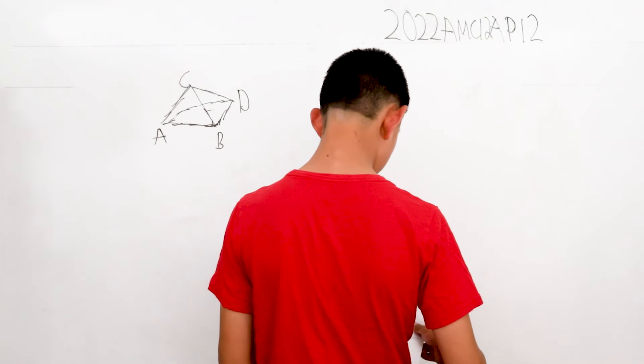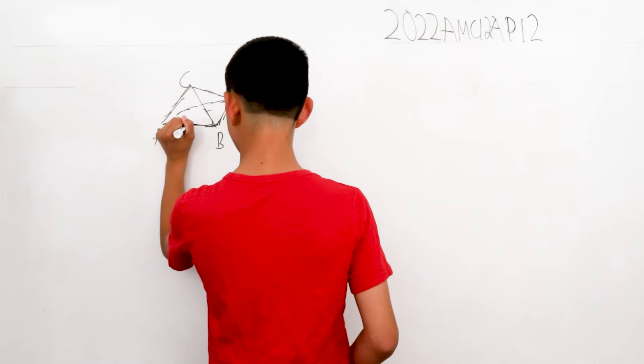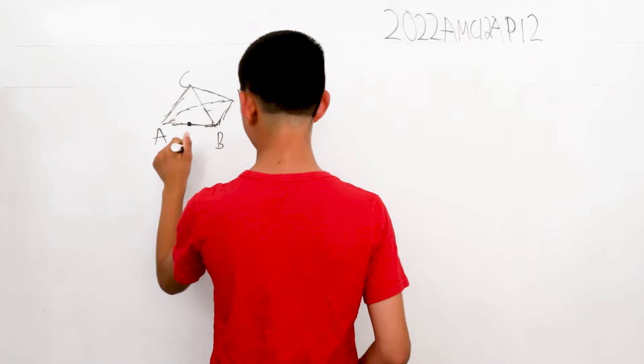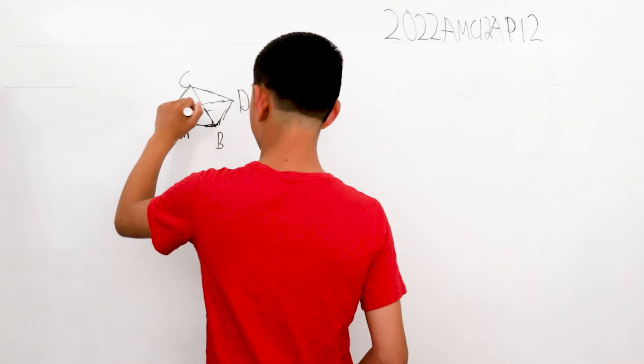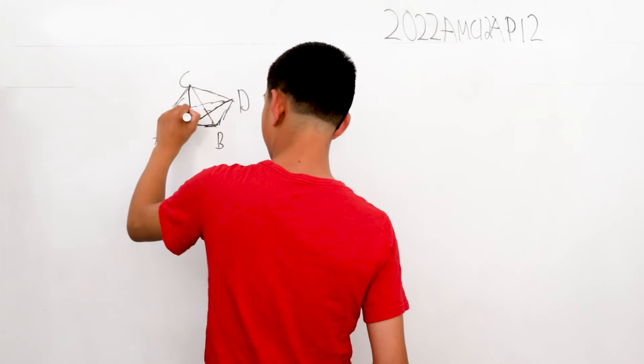We want the cosine of the angle CMD, and let's let this middle, and this is the midpoint M. So we can visualize lines here. There we go.